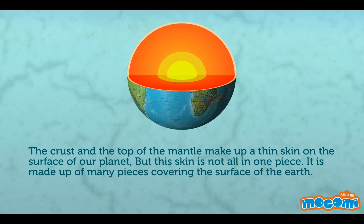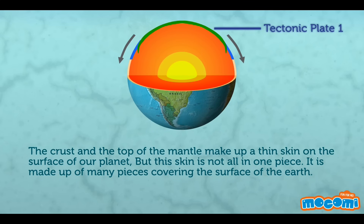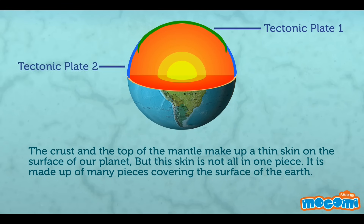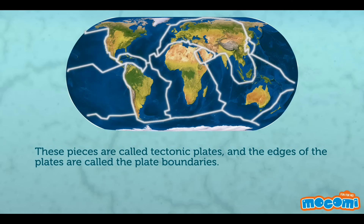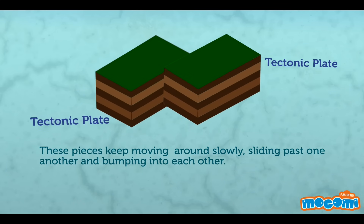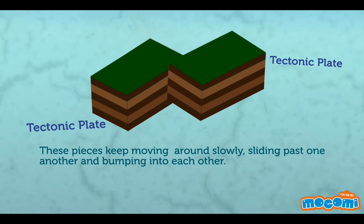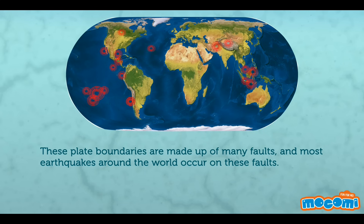The crust and the top of the mantle make up a thin skin on the surface of our planet, but this skin is not all in one piece. It is made up of many pieces covering the surface of the earth. These pieces are called tectonic plates, and the edges of the plates are called the plate boundaries. These plate boundaries are made up of many faults, and most earthquakes around the world occur on these faults.